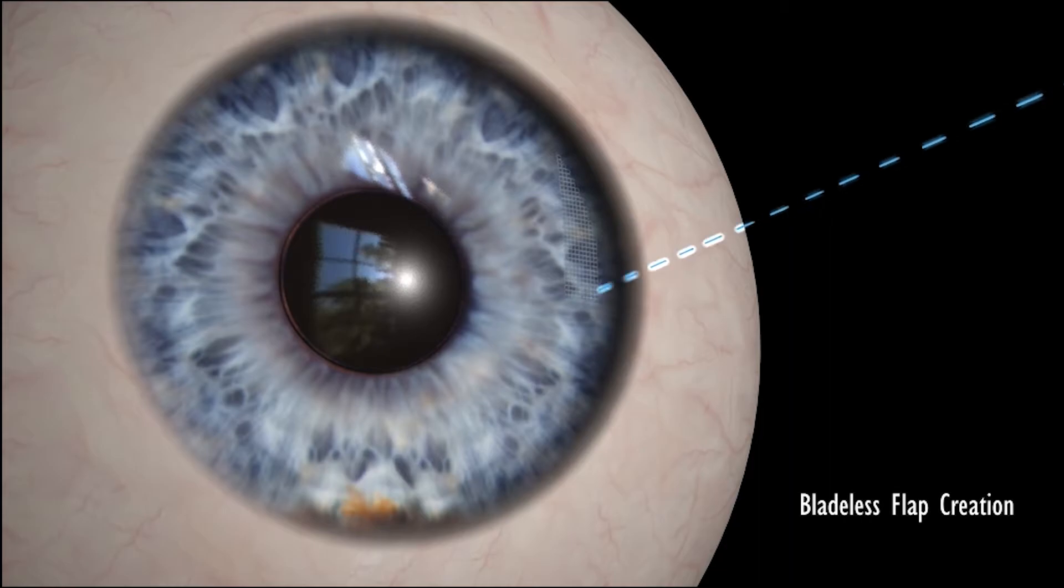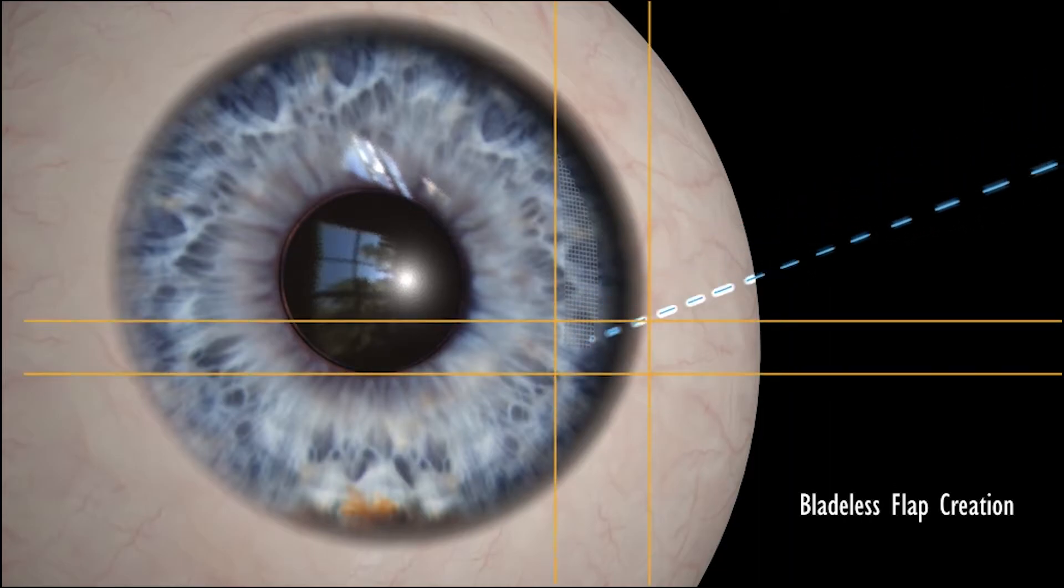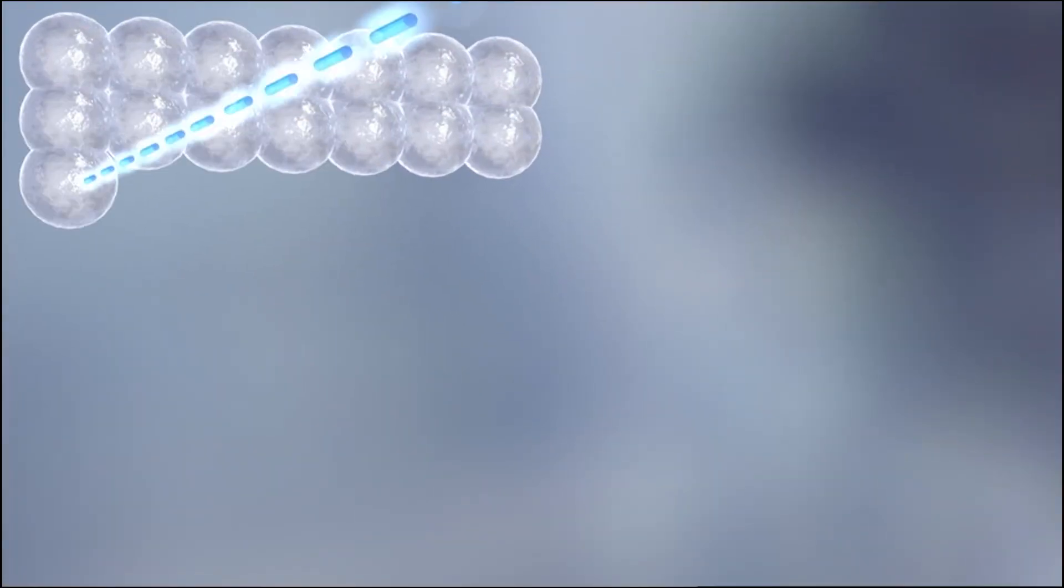Z LASIK is a two-step, bladeless procedure. With a femtolaser, your surgeon creates a thin flap on your cornea.